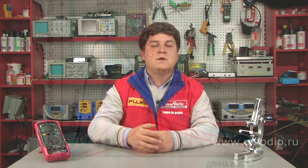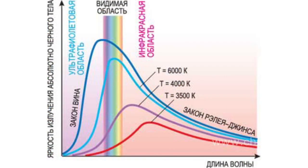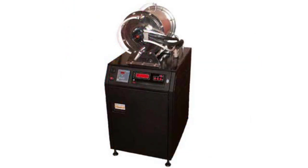The correlation between brightness, color, and temperature of a black body is determined by the laws of radiation by Stefan-Boltzmann, Wien, and Planck, as well as Wien's displacement law. These laws imply that the brightness of a black body increases rapidly as its temperature grows, while the emission peak shifts to a shorter wavelength.